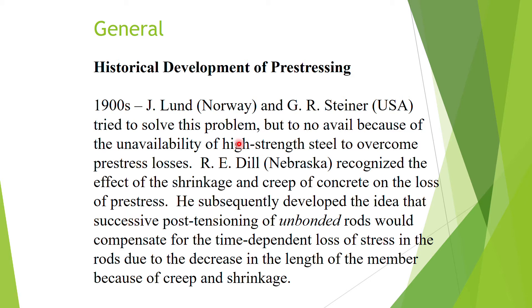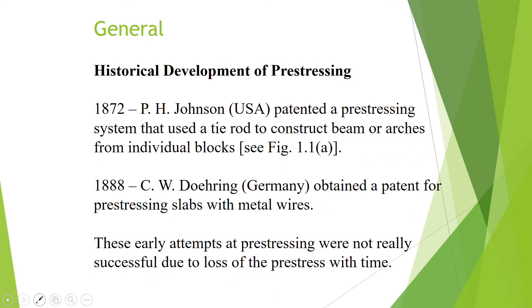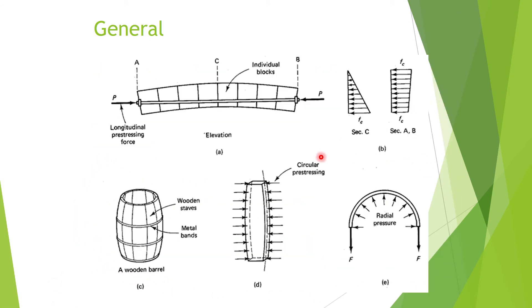R.E. Dill identified this phenomenon of creep and shrinkage and their effect on the loss of stress in pre-stressing steel. In the 1920s, W.H. Hayward from the US developed the principle of circular pre-stressing, as seen in the wooden barrel example where metal bands circulate the structure, exerting compressive stress on the wooden staves in the circumferential direction to contain radial pressure.